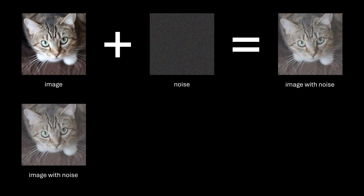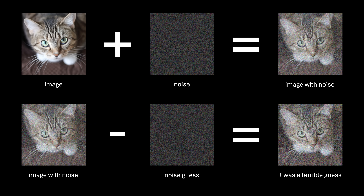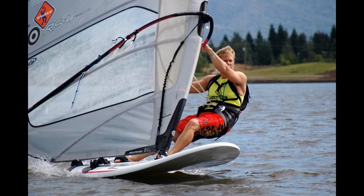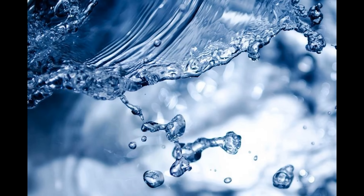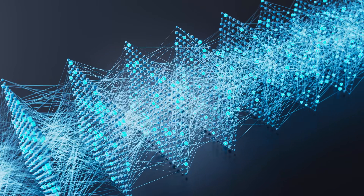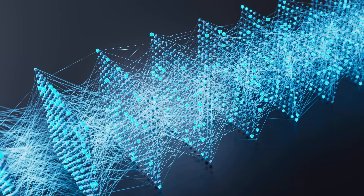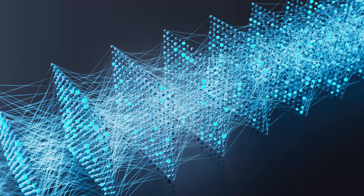Remember, this is still the training stage. So at this point you say, 'No, that's terrible what you came up with. This was the actual noise that I added. Now go away and fix all of the parameters in your model so it does a better job next time.' But actually, you're doing it with millions of images at the same time — telling the model how much it got all the pixels wrong across millions of images, and asking it to tweak all the parameters inside its neural network so that it's better for all of these images at the same time. I told you it was wild.